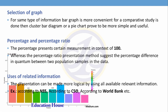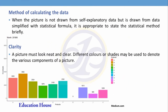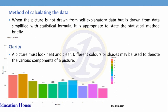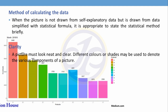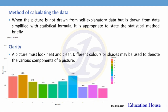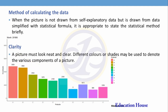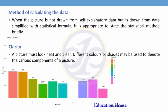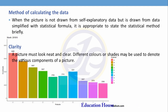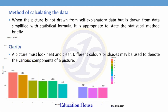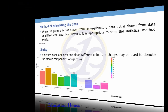Clarification of data should describe the method of calculating the data. When a picture is not drawn from self-explanatory data but from various data simplified with statistical formulas, an appropriate statistical method should be used with proper calculation. A picture must look neat and clear; different colors or shades may be used to denote various components.